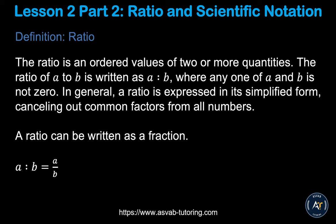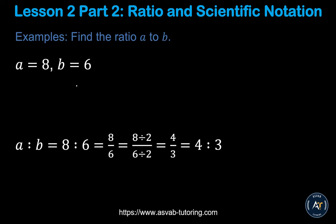A ratio is the same as a fraction — you are comparing numbers in a different way. You can write 'a ratio b' as a over b. Applying this concept to an example: if a equals 8 and b equals 6, then a ratio b is 8 ratio 6. Whatever comes first is the numerator, and what comes on the right side is the denominator.